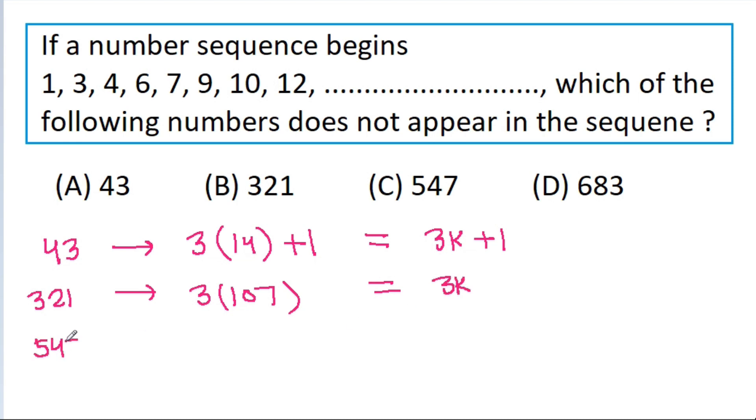And 547 is 3 times 182 plus 1, that is 3k plus 1, and 683 is